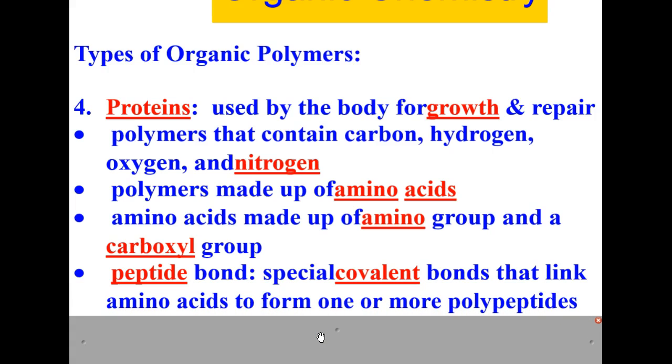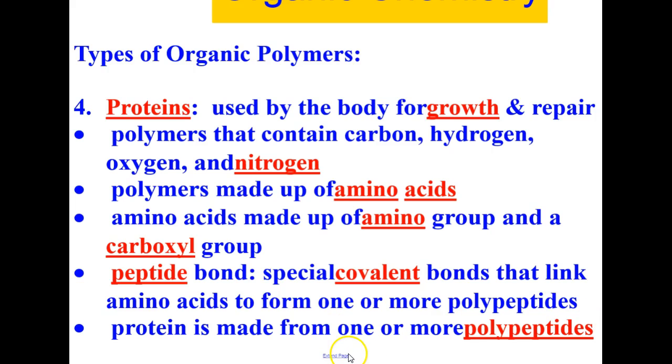Proteins contain bonds called peptide bonds. These are special covalent bonds that link amino acids to form one or more polypeptides. A protein is made from one or more of these polypeptides.